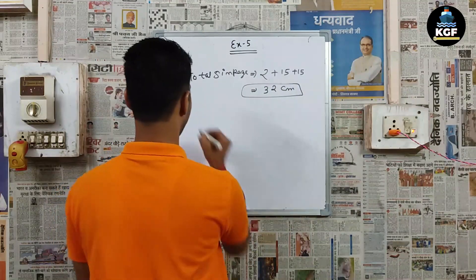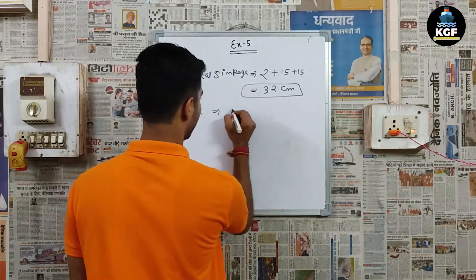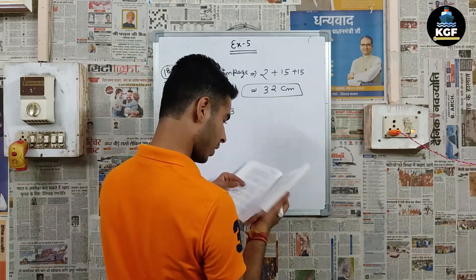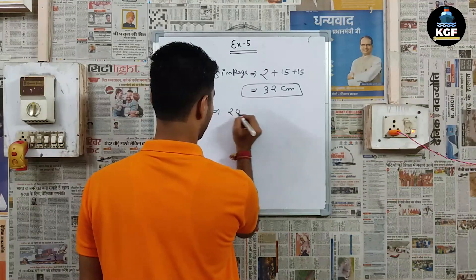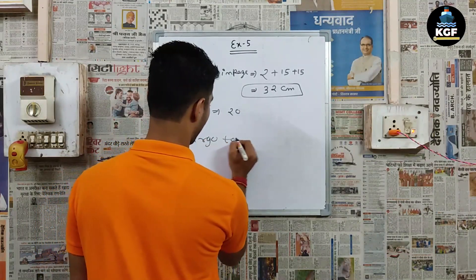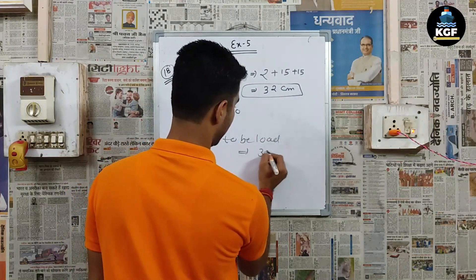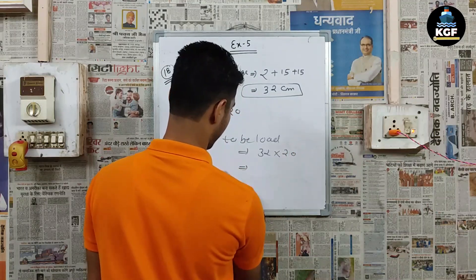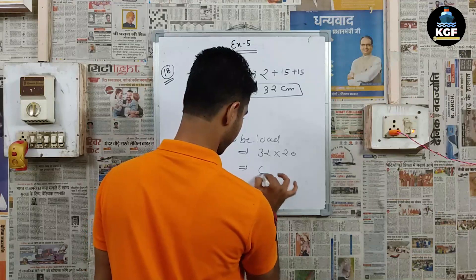Total sinkage is 32 centimetres, and we have TPC = 20. So cargo to be loaded = 32 × 20 = 640 tonnes.